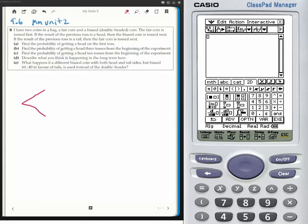So a fair coin is tossed first. I can get a head or a tail on the fair coin and that's going to be a half and a half. If I get a head, then the biased coin is tossed next and I'll get a head. But if I get a tail, a fair coin is tossed and I might get a head or a tail. And that's a half and that's a half.